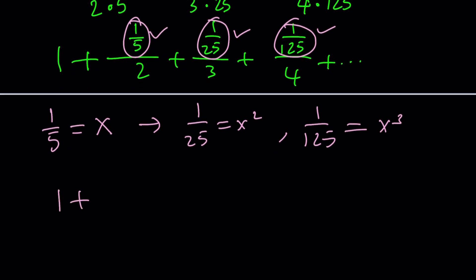That's perfectly fine: 1 plus x divided by 2 plus x squared divided by 3 plus x cubed divided by 4, and so on. We have a power of x divided by some number which is one more than the power of x. In other words, the general term is x to the power n divided by n plus 1.